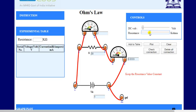Initially, first we will set DC voltage to 1 volt, and the value of current is 0.03 milliampere. So we will add this value to the experimental table.